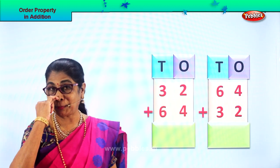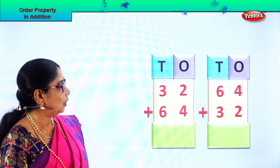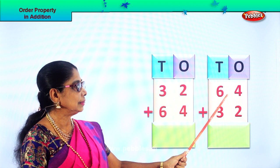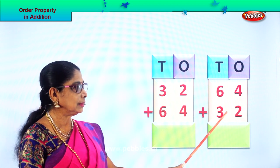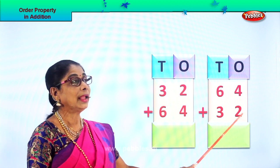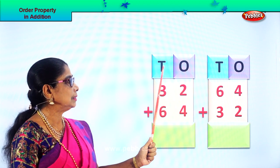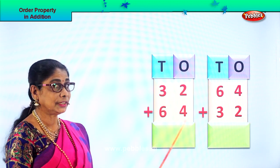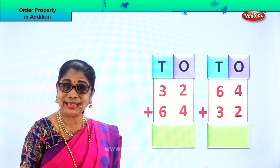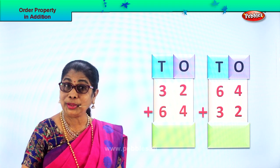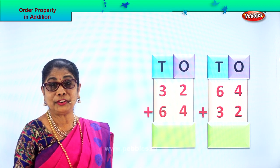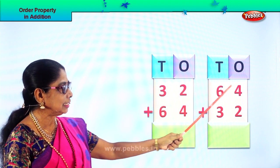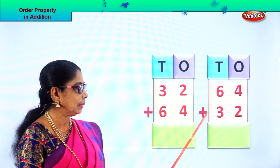Look what you have here. You have ones and tens: 64 plus 32, and here you have 32 plus 64. Either way we are doing the order property of addition. Let's add the first one, 64 plus 32.